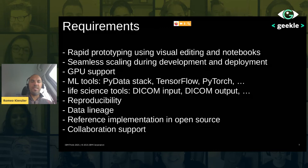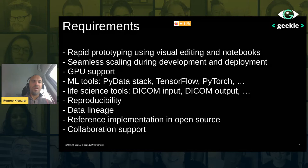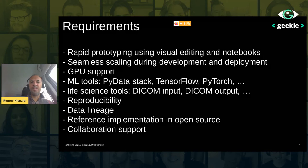Another requirement is reproducibility. If data scientist A does something and gets hit by a car, it has to be guaranteed that data scientist B can just take over and find out what was done — which data was used, which algorithms, what software was written, and which versions of the frameworks were used. Data lineage is also important: you need to know which data was involved in training a model or creating a visualization. This whole thing also has to be in open source, with collaboration support because many people work together, including internationally and both asynchronously and synchronously.